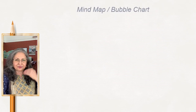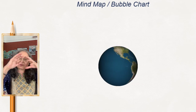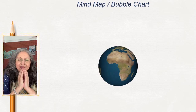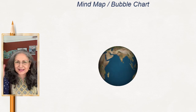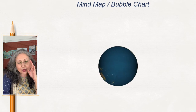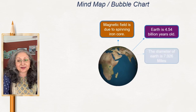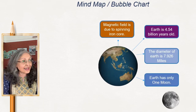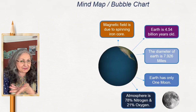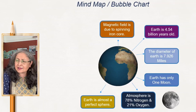Let me show you the last graphic organizer of this episode — the versatile mind map, also known as a bubble chart. This is very versatile and can be used in any subject. At the center you put the big idea. I've taken our beautiful planet Earth — there is no other planet as beautiful as this one — and around it all the ideas and sub-parts of whatever we might want to learn. I'm speaking about the magnetic fields, the age of the earth, the diameter of the earth, how many moons does it have.